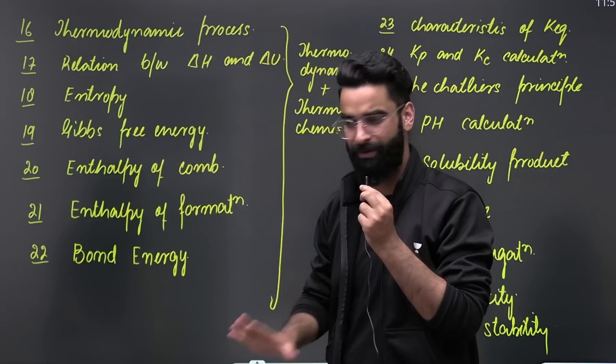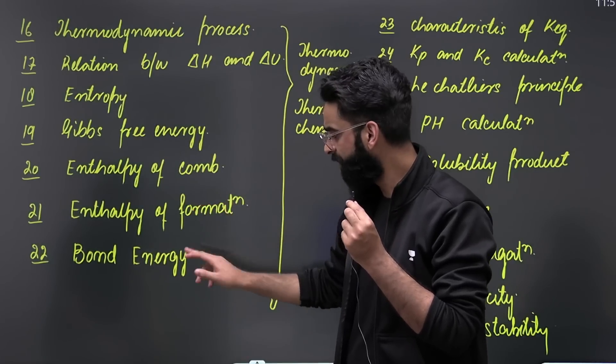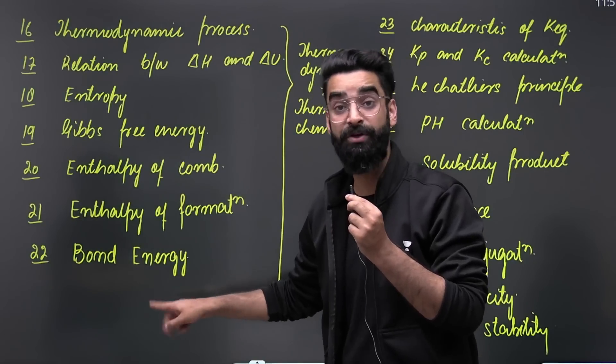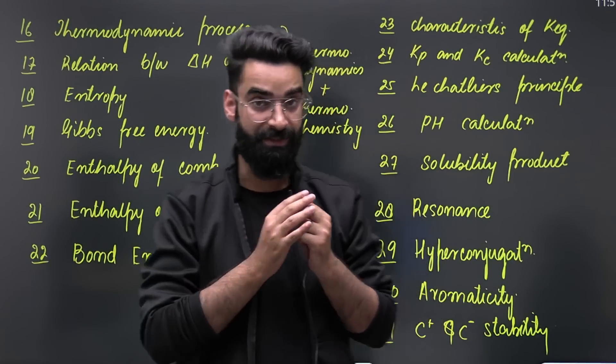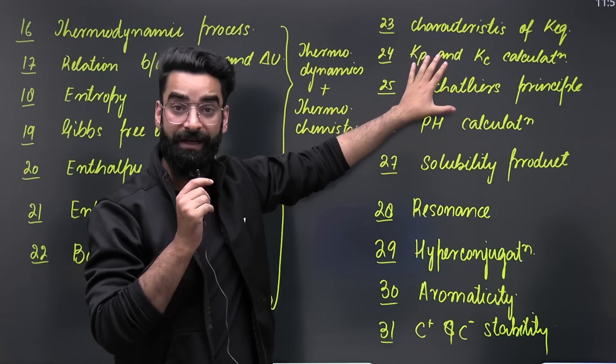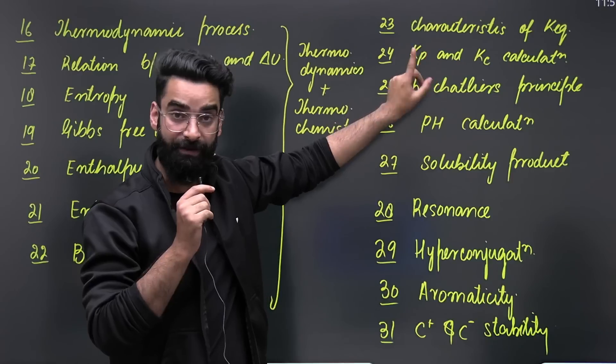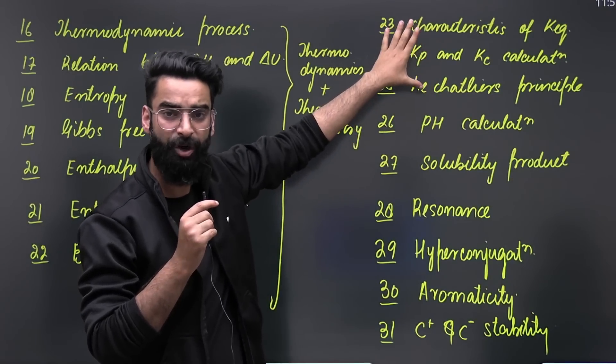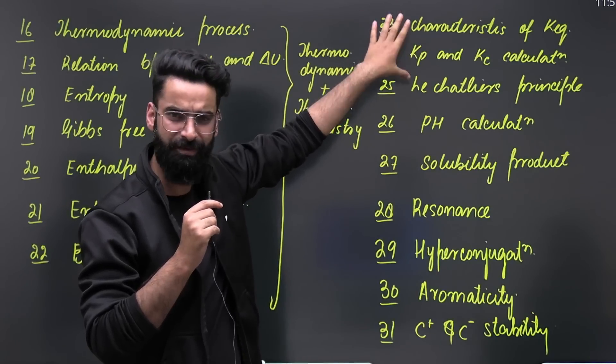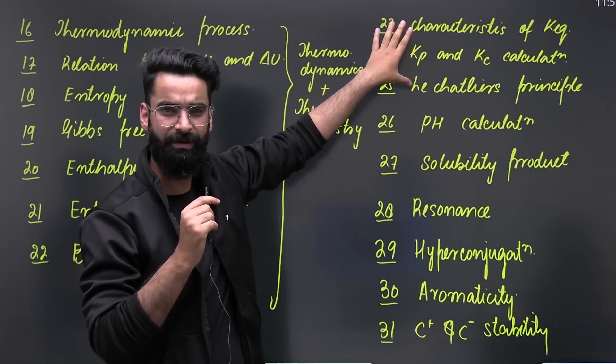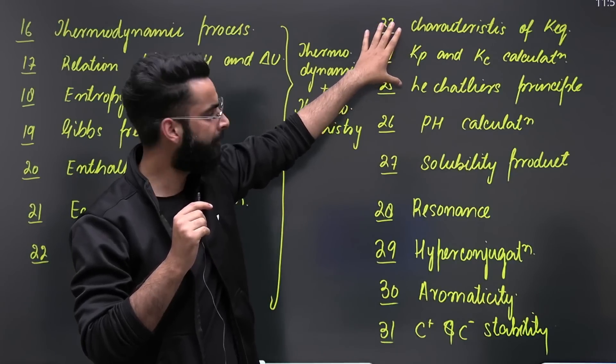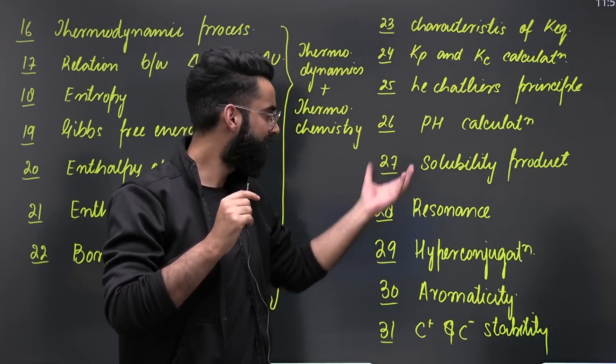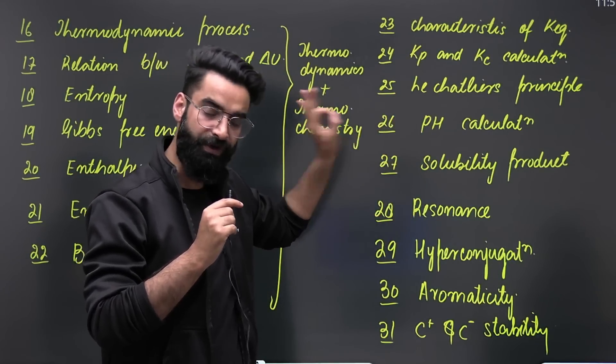When you talk about thermochemistry, there are three to four topics only which you need to focus on: enthalpy of combustion, enthalpy of formation, bond energy, and one topic which I've skipped over here - that's enthalpy of neutralization, which is again one more important topic. Talking about chemical equilibrium, characteristics of equilibrium constant is important, Kp Kc calculation is important, and Le Chatelier's principle. These are the three topics. If you just read these three topics particularly, I'm sure the question whichever comes in your chemical equilibrium you will be easily solving. In ionic equilibrium, you have got pH calculation and solubility product. These are the two important topics from which questions frequently come.